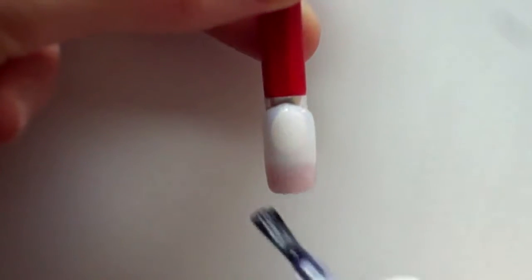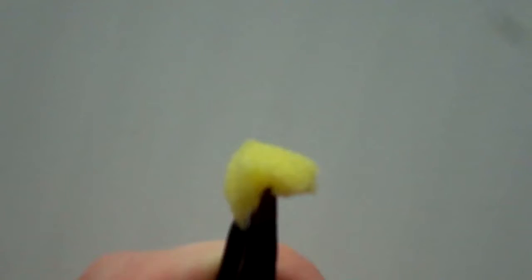First, apply a base coat. Next, use a gold glitter polish and use a sponge to apply it all over the nails as a background.